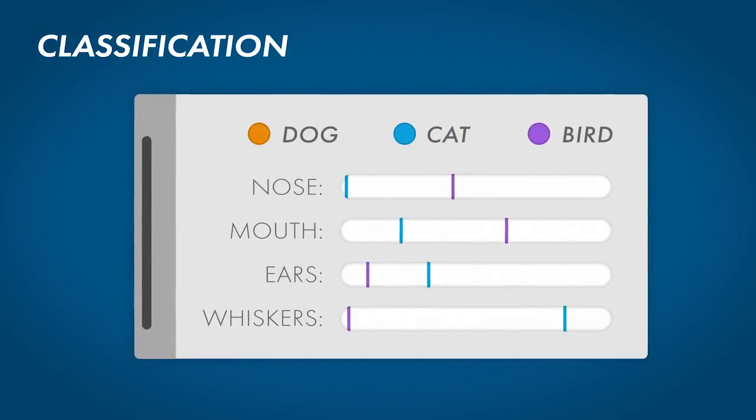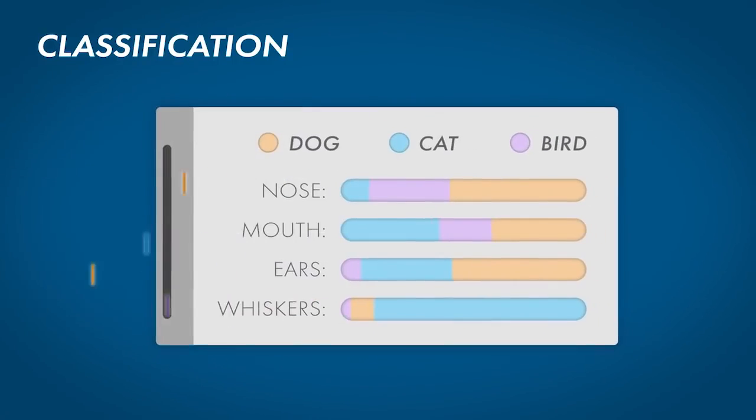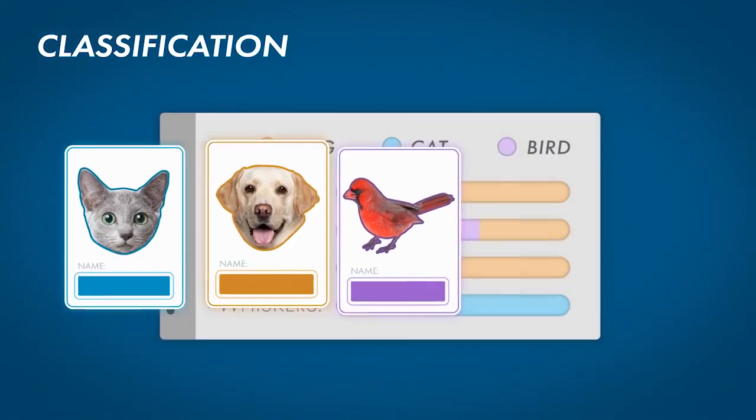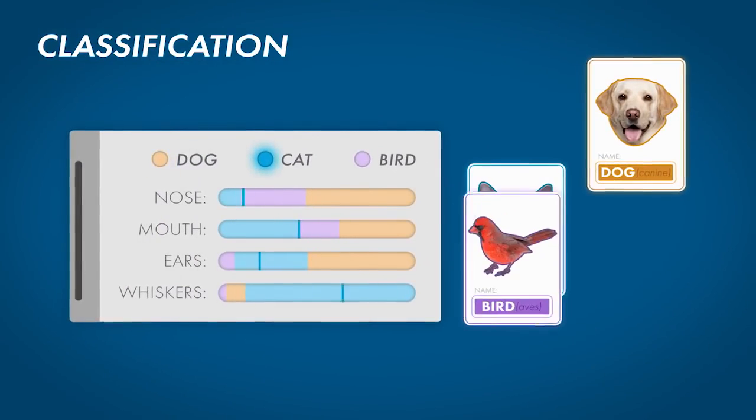You use these features to train a model, which will determine whether something gets labeled as a dog, a cat, or a bird.